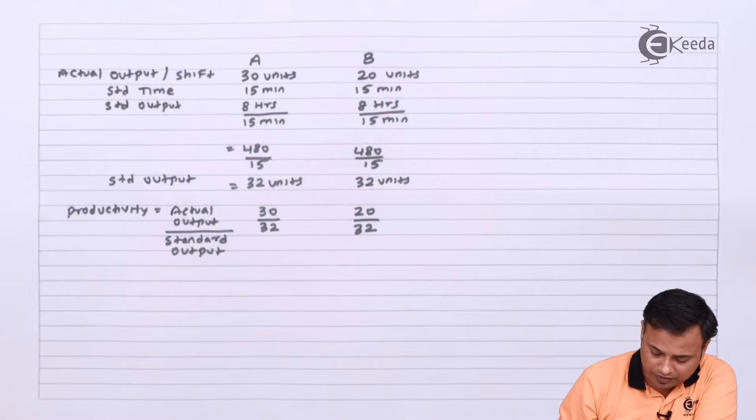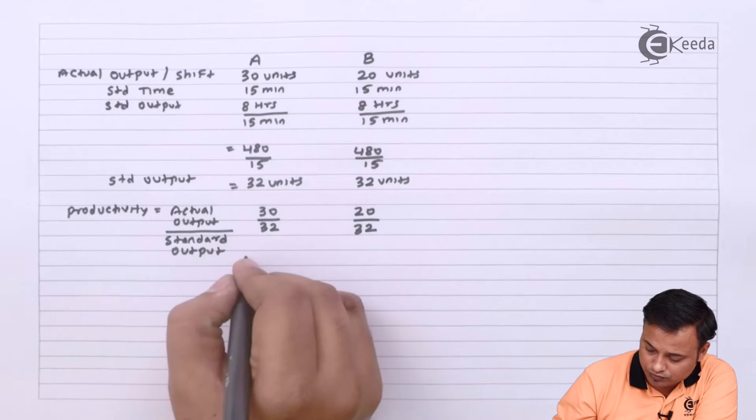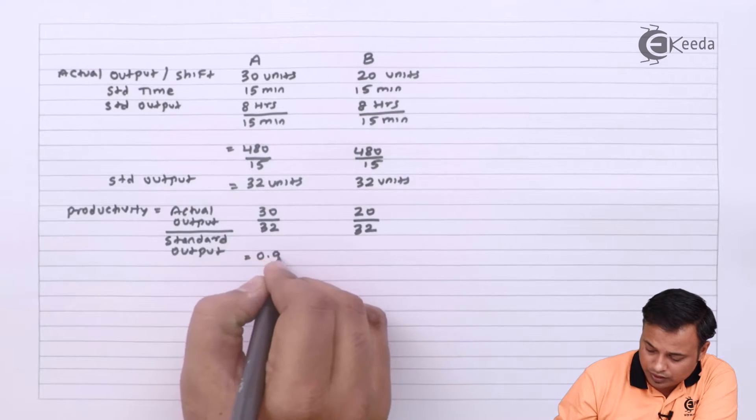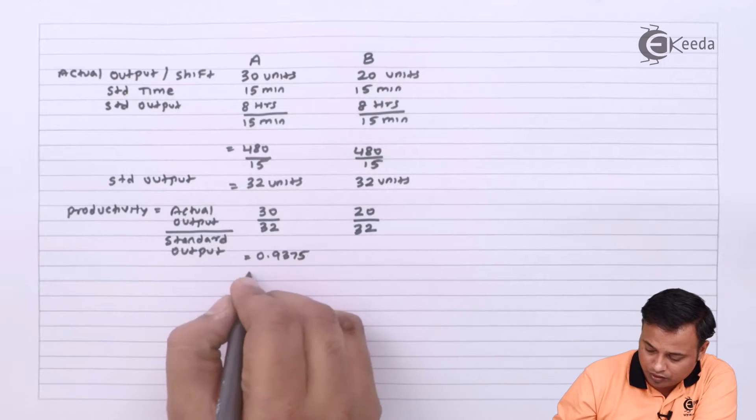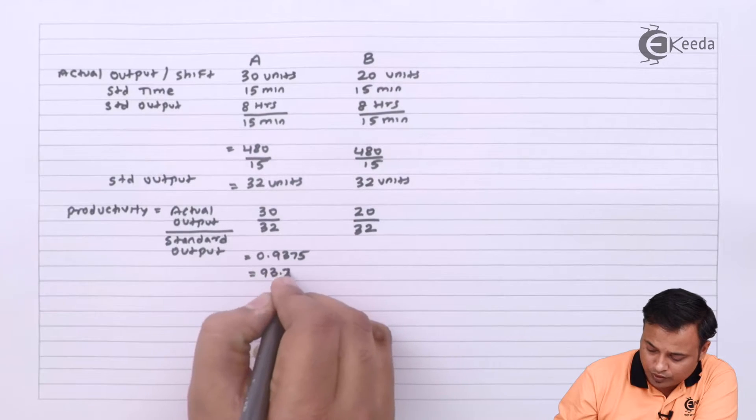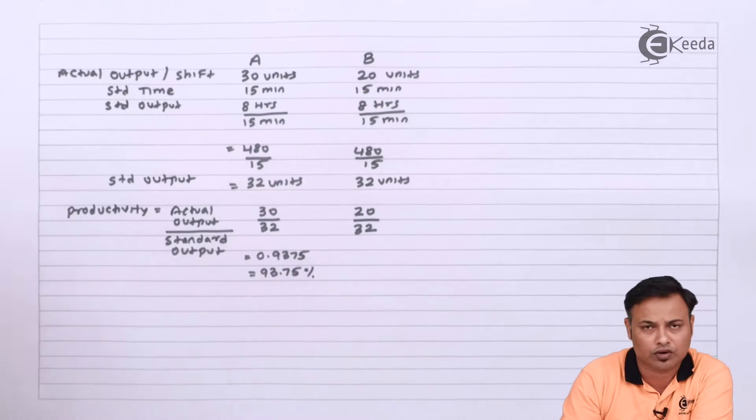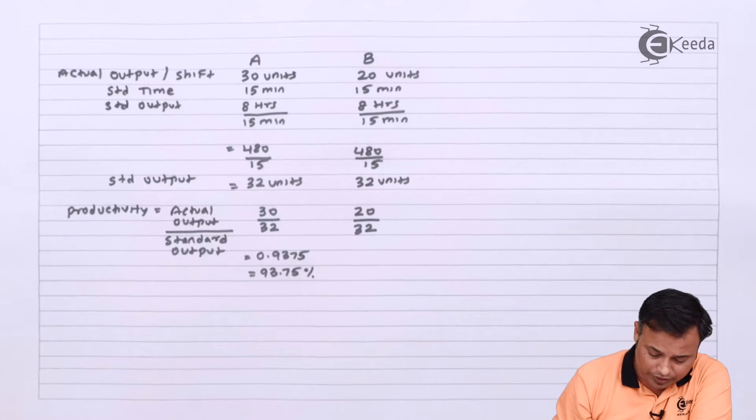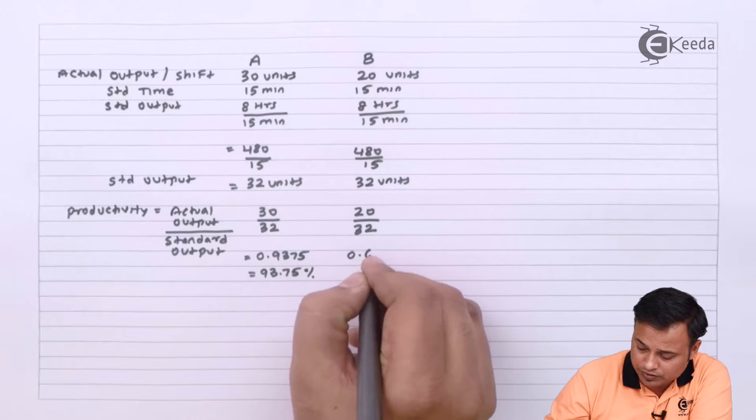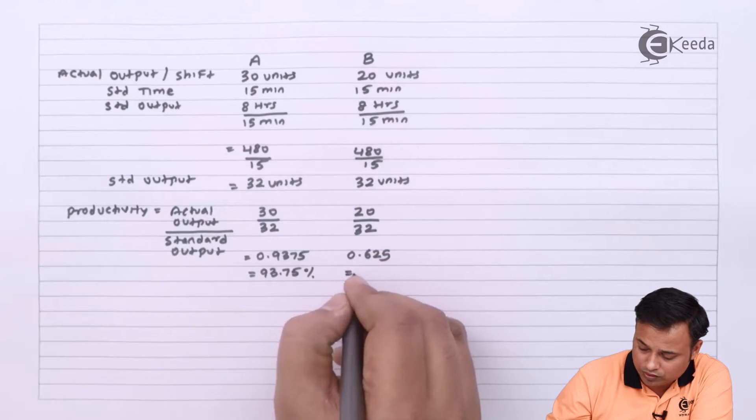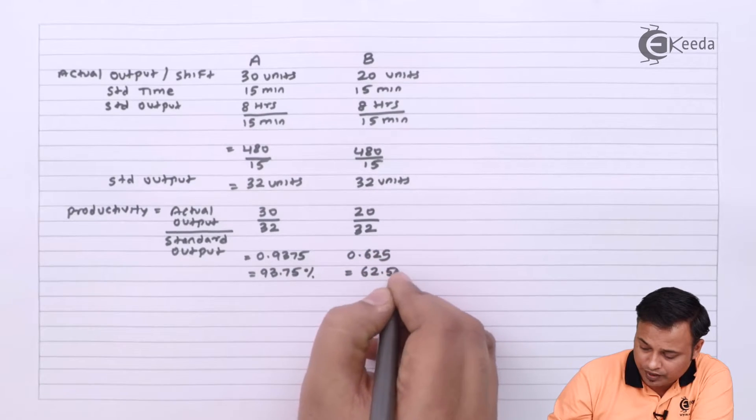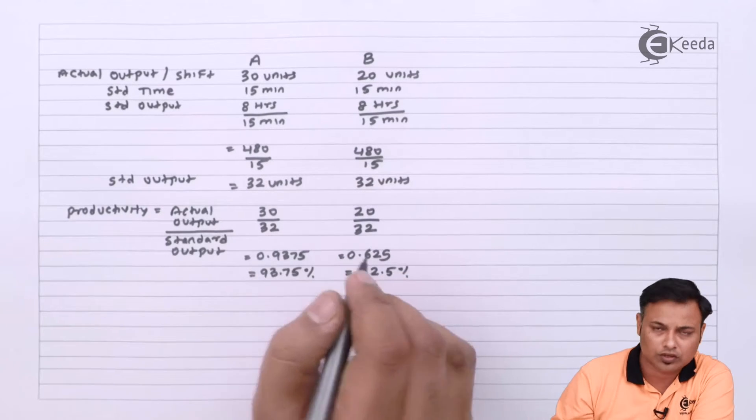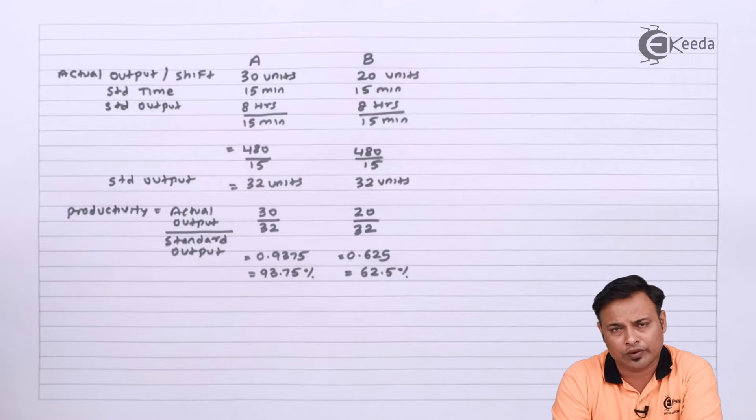So 30 divided by 32 is 0.9375 or 93.75 percent if you want in percentage. In second case it is 20 divided by 32 which is 0.625 or 62.5 percent.